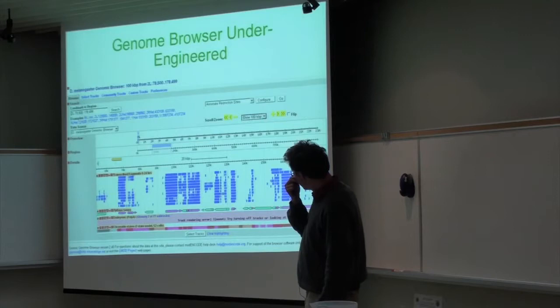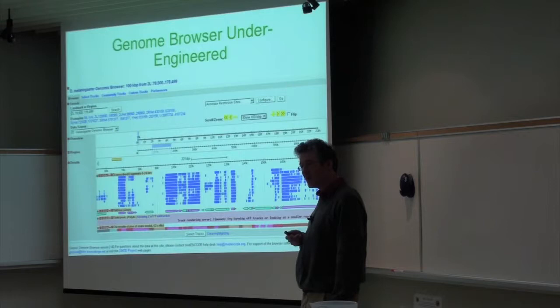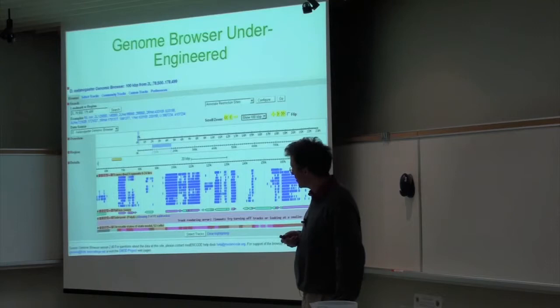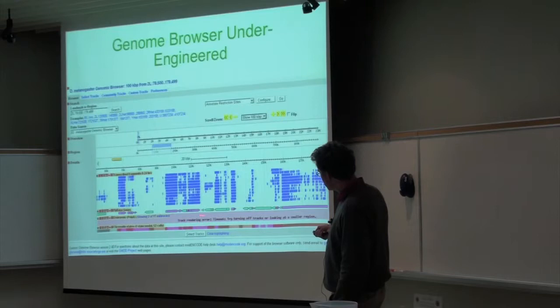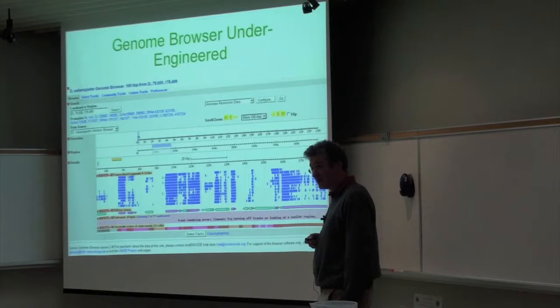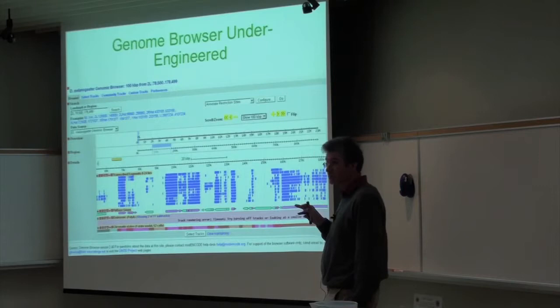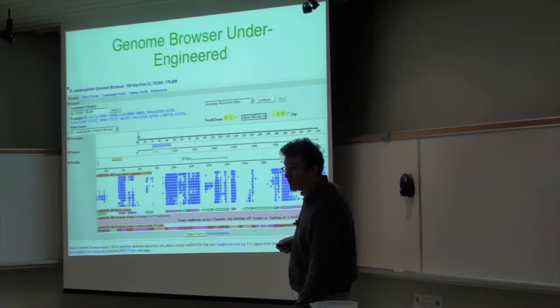Here's something I'm not too ashamed to admit: our genome browser, which worked great on WormBase and FlyBase, did not work great when the data became an order of magnitude larger. To this day, if you try to look at too much data at once, you get error messages — track rendering error, timeout, try turning off tracks or looking at a smaller region. That shouldn't happen. In retrospect, we would either have gone with a different browser — there wasn't an appropriate one at the time, but there are now — or hired a full-time software engineer to look after it.